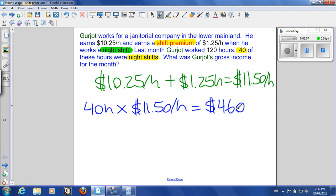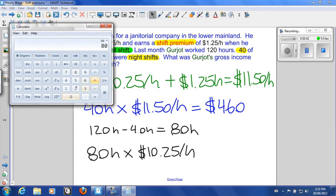But he worked 120 hours total. 120 is not equal to 40, which means he must have worked some shifts that were not night shifts, or daytime shifts. If we take 120 hours and subtract the 40 hours, we have 80 hours remaining. He's going to get paid his regular wage for these 80 hours. So 80 hours multiplied by $10.25, which is his regular wage per hour, gives us $820.